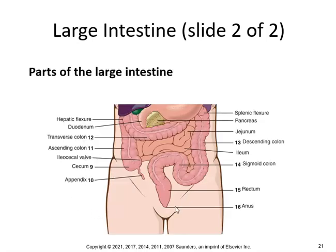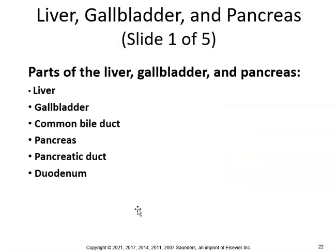Here is the appendix, the cecum, the ileocecal valve, the ascending colon, the descending colon, the sigmoid colon, the rectum, and the anus.